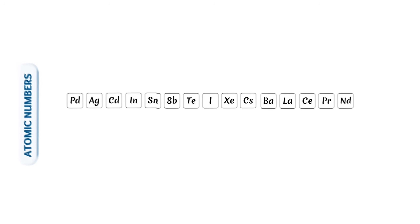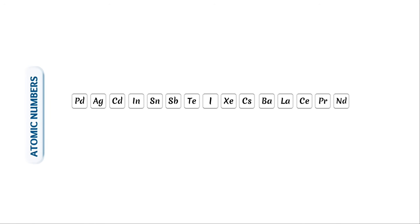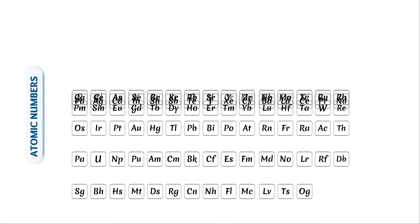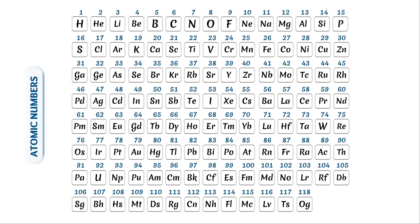So first we give numbers to the atoms and order them by their atomic numbers. Here, at the top of the table, we keep the hydrogen atom with an atomic number of 1. The atom with an atomic number of 118 is oganesson, so we place it at the very end of the table.